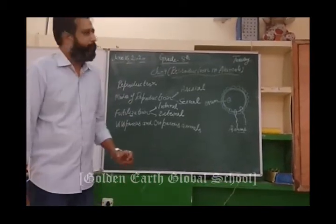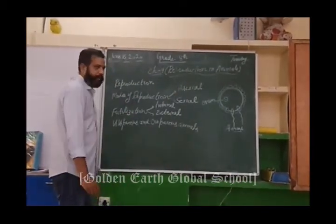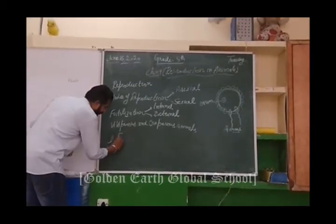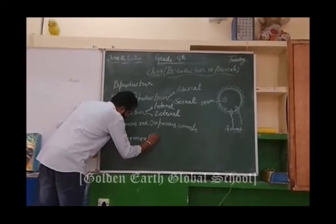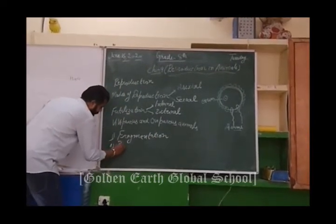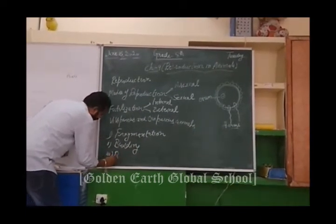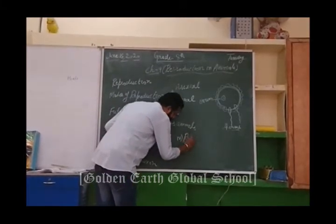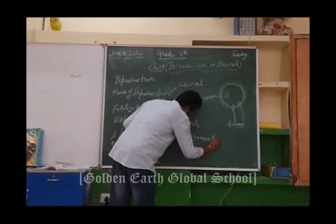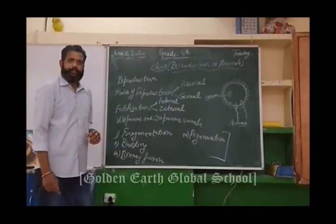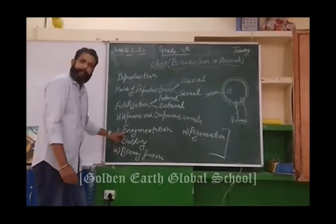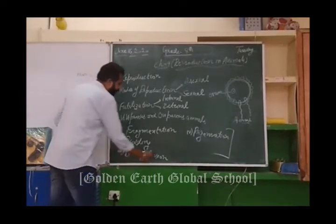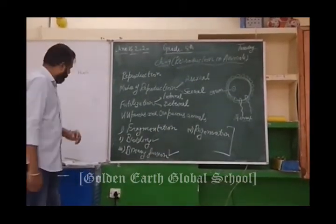After this, we will discuss some modes of asexual reproduction. There are a few types of asexual reproduction: fragmentation, budding, binary fission, and regeneration. But in this chapter we will discuss about budding and binary fission.